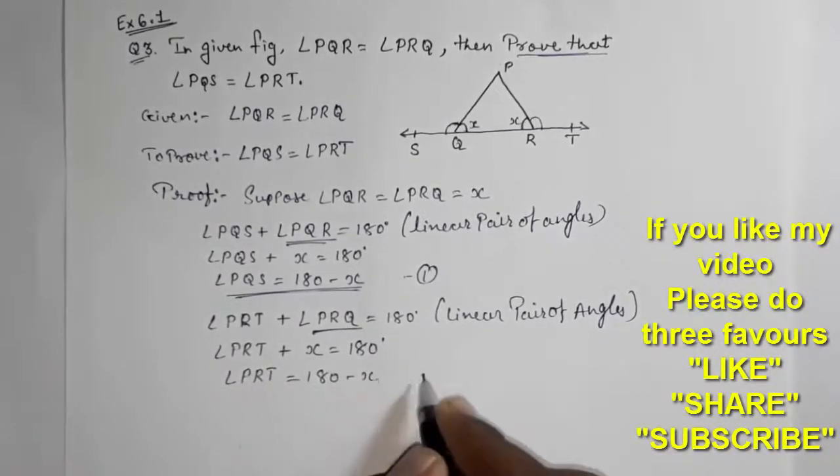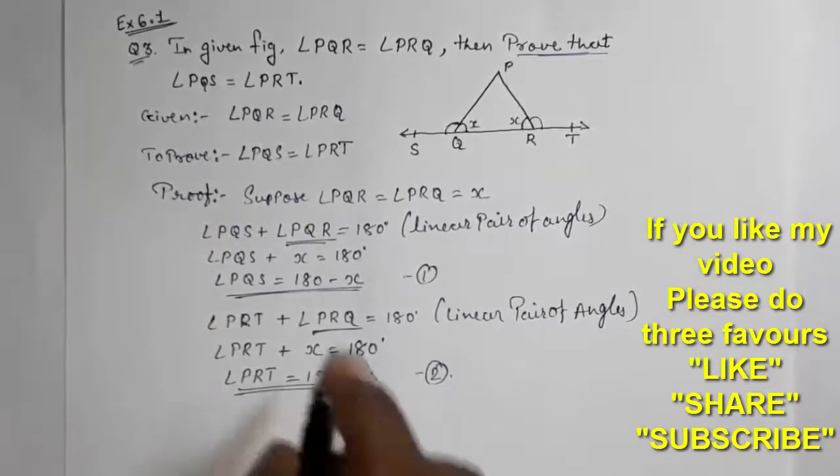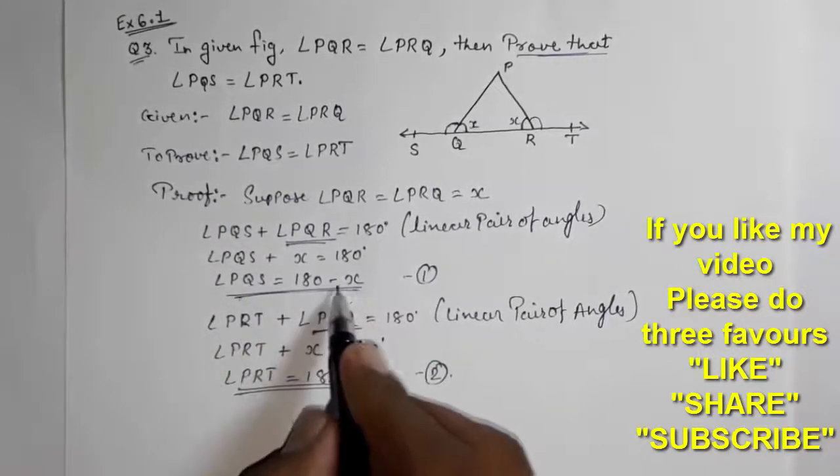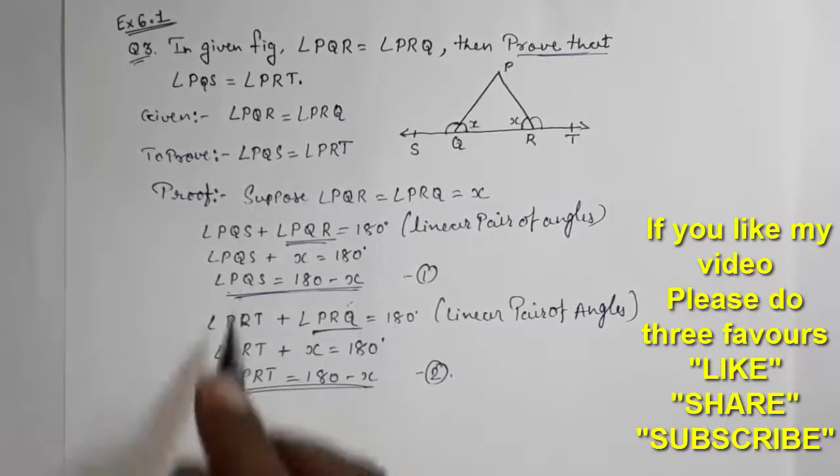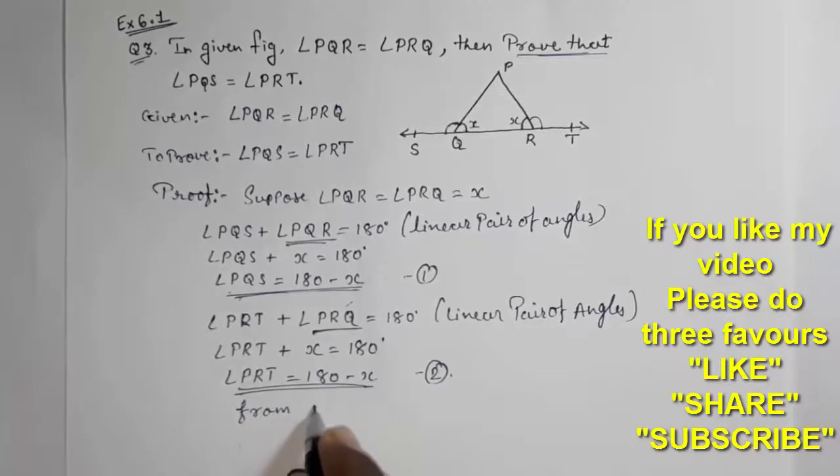This is result number 2. Look here, from 1 and 2, this answer is also 180 minus x, this answer is also 180 minus x. So both will be equal. So directly you can write from 1 and 2.